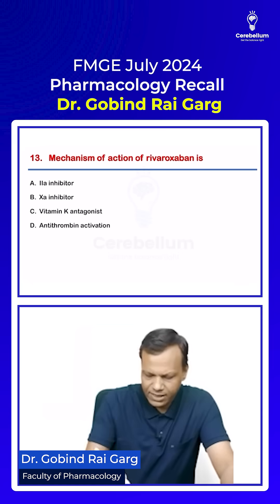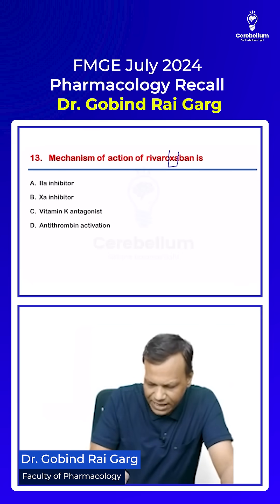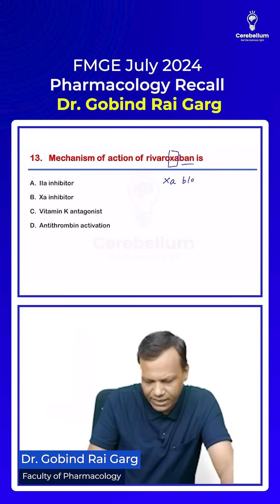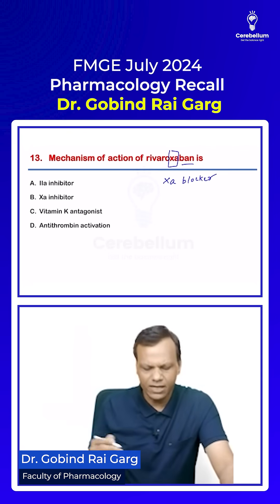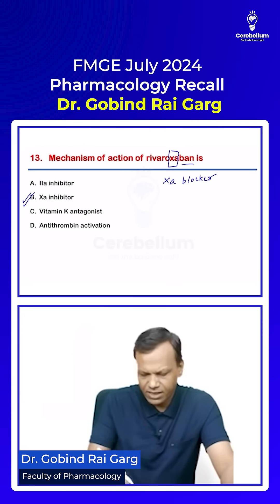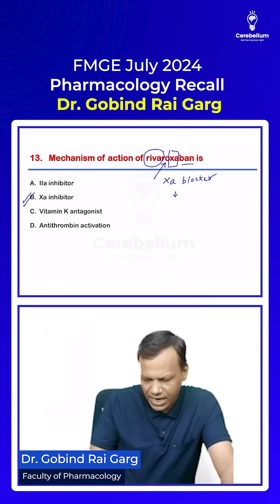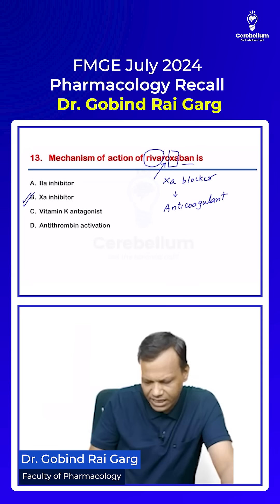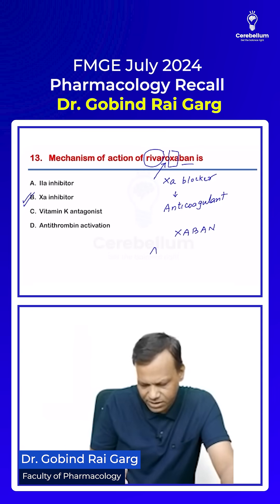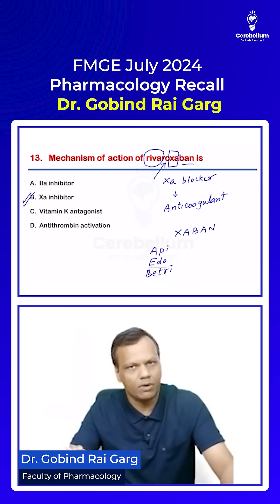The mechanism of rivaroxaban — the name itself says XA, meaning it is a Xa-ban, so it is a Factor Xa blocker or inhibitor. It is a reversible oral Factor Xa blocker used as an anticoagulant — a new oral anticoagulant. Any drug ending with XA-ban is a Factor Xa blocker. Other drugs in this group are apixaban, edoxaban, and betrixaban.